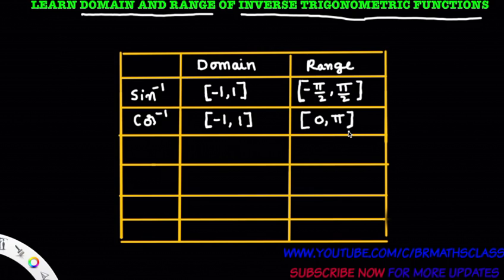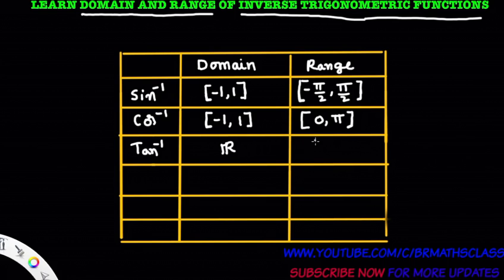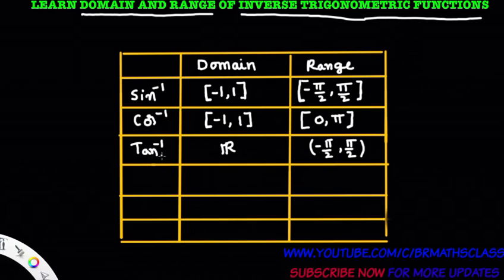It is important to remember domain and range of inverse trigonometric functions as it helps while solving problems. Now we will see domain and range of tan inverse function. Tan inverse is a function whose domain is the set of all real numbers and whose range is the open interval minus pi by 2 comma pi by 2.